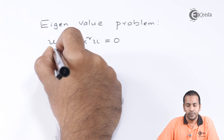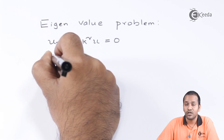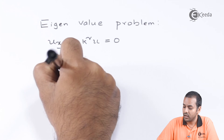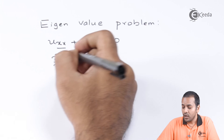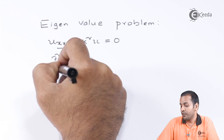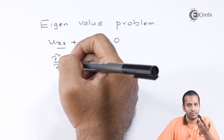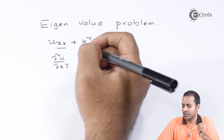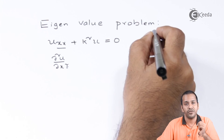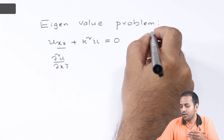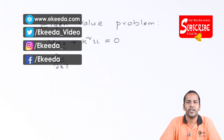Similar to a boundary value problem, x is our dimension here. Since this is a second-order equation — d²u/dx² — we need two boundary conditions. For some particular values of k, a solution to this equation will exist. These are called eigenvalue problems. Thank you for watching — stay tuned and subscribe.